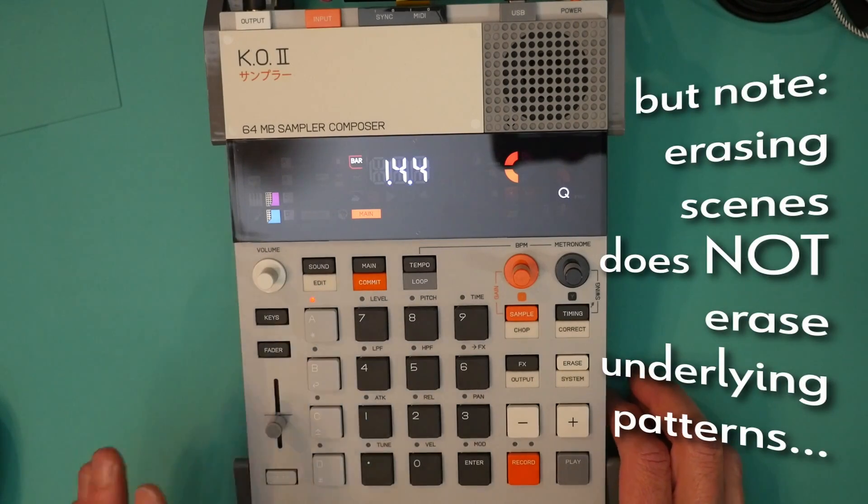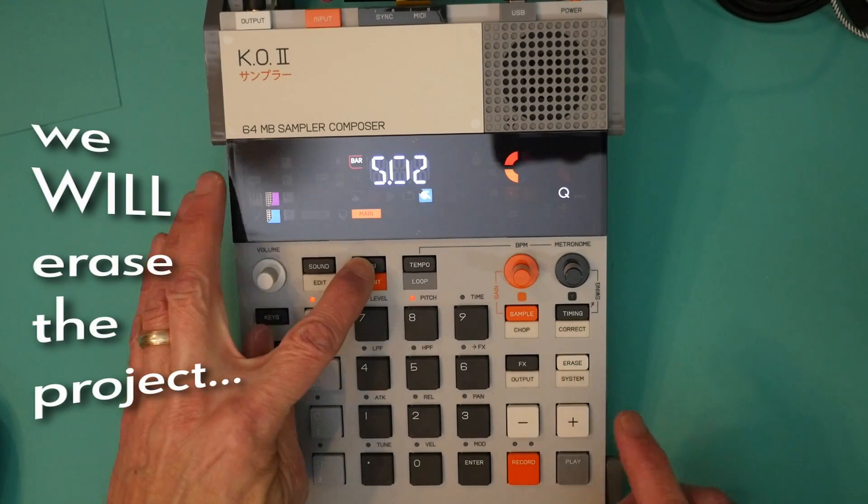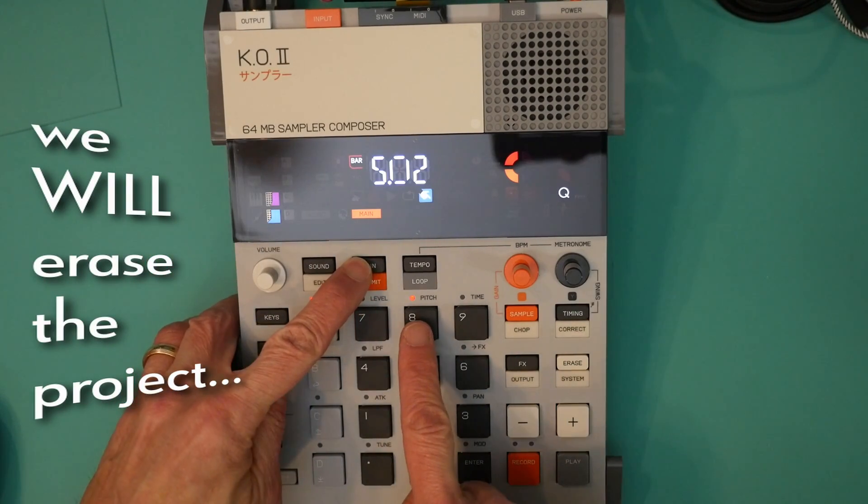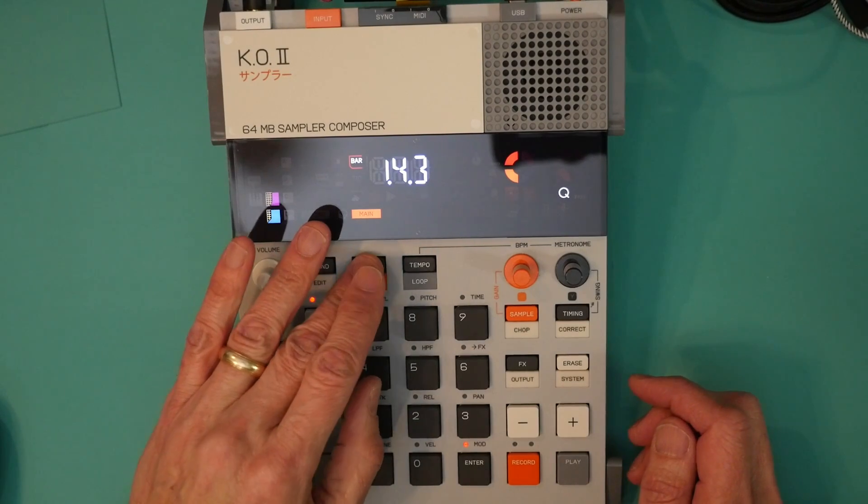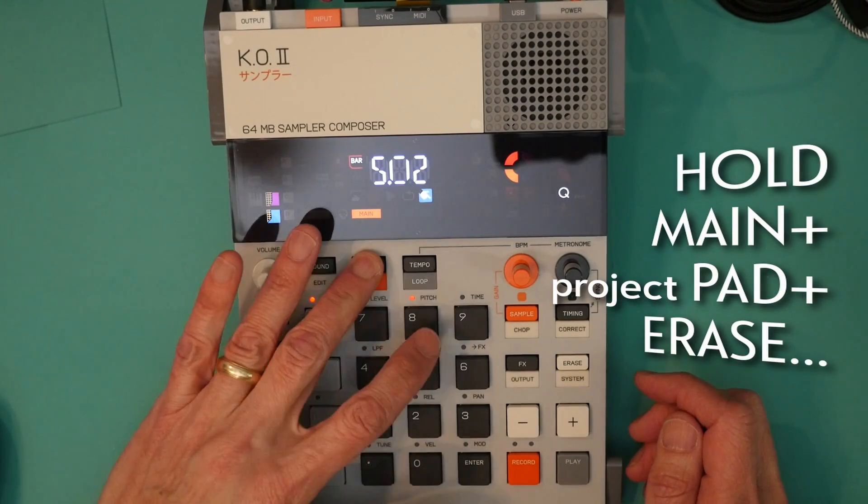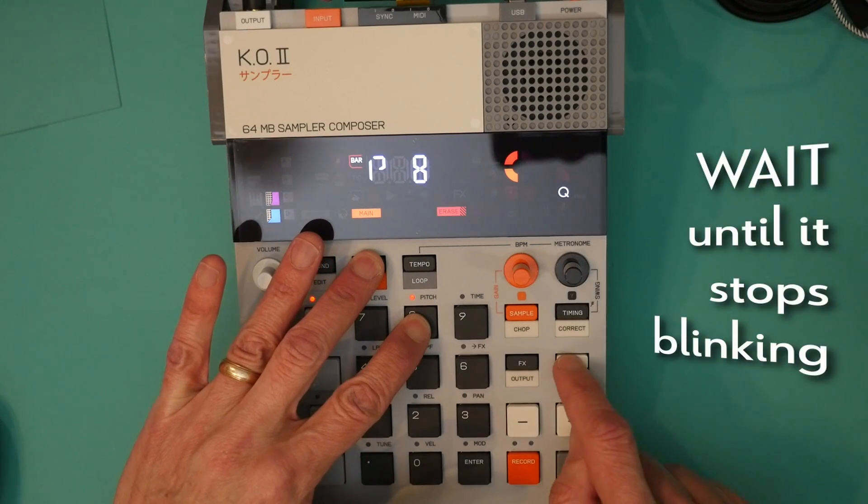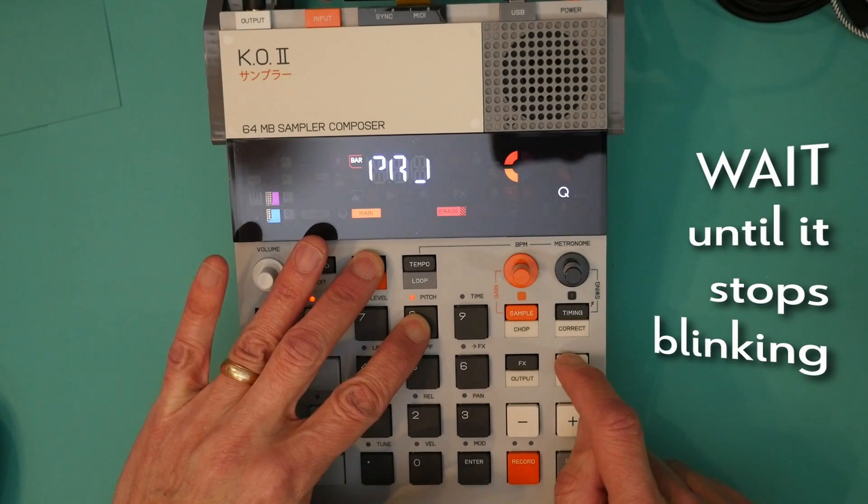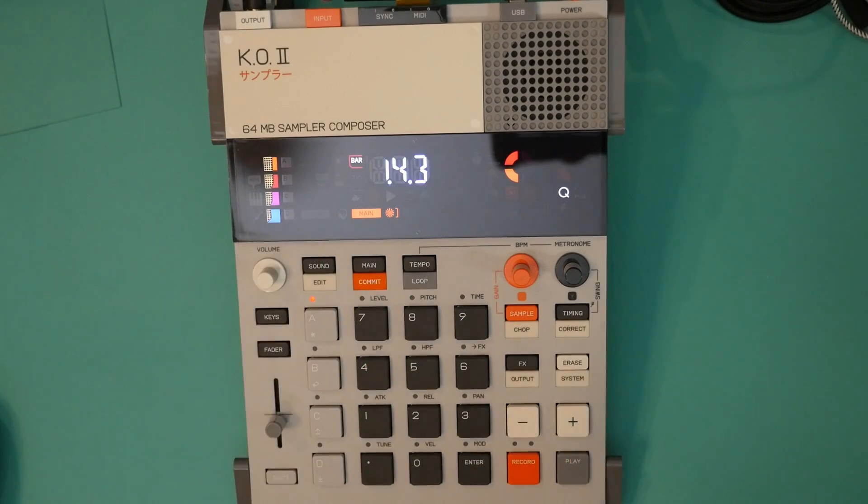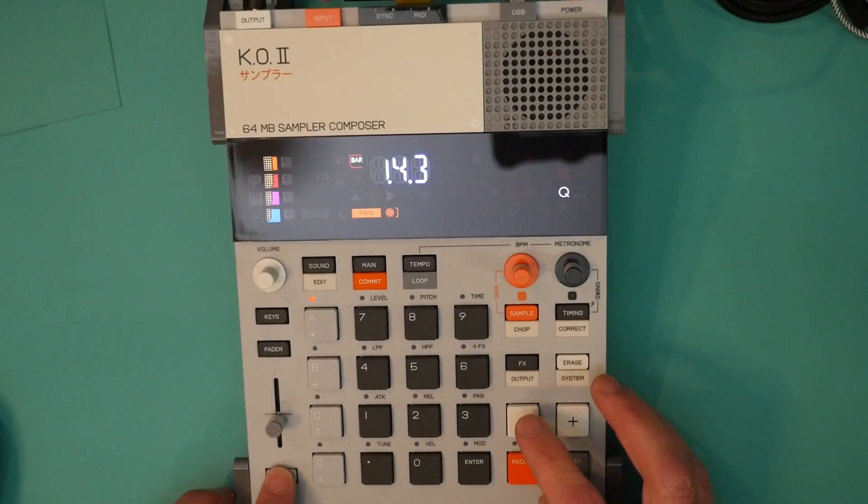But we're going to truly start from scratch. No sounds. We hold main to see what project we're on. We're on project eight. We hold the pad of the project we want to erase. That's eight. And we hold erase. And we wait until it stops blinking.